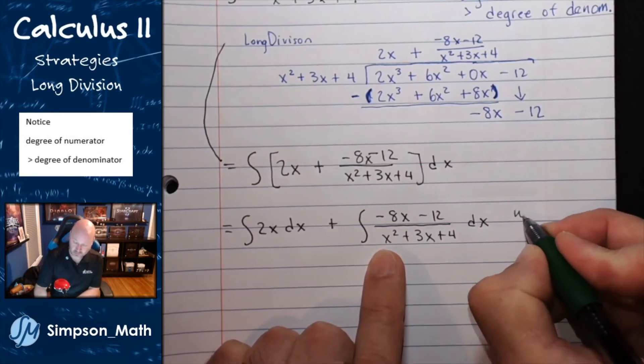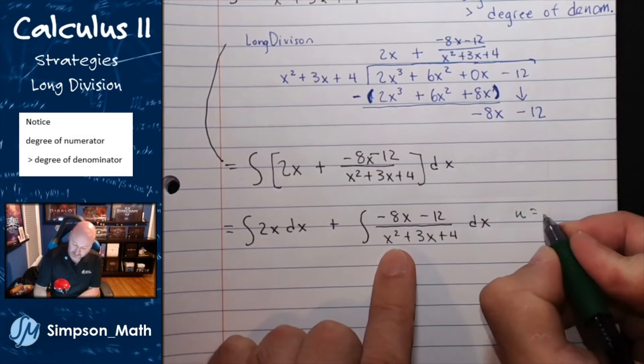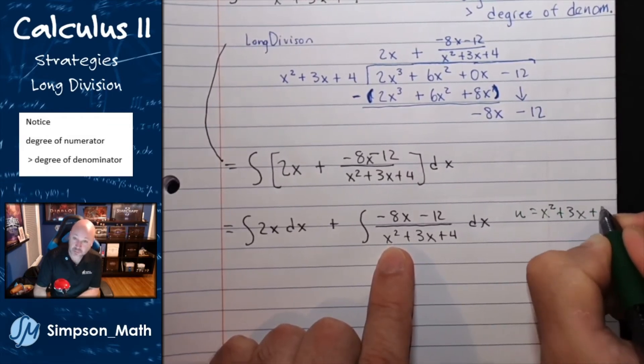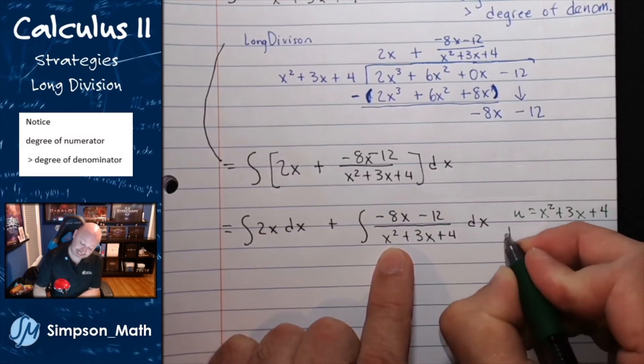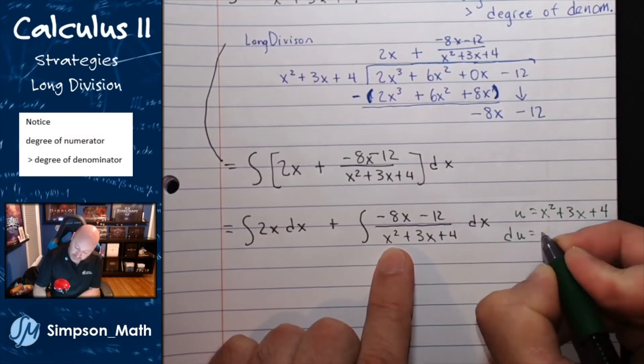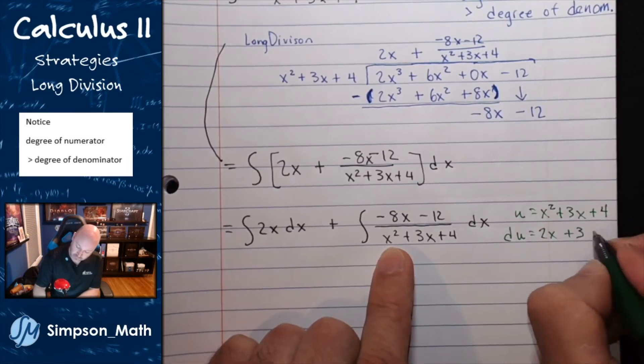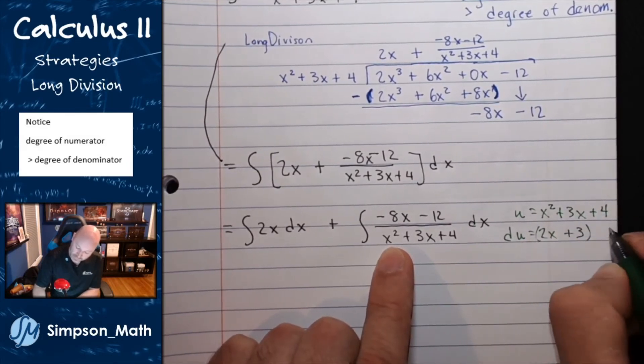If I let u be the entire denominator, x squared plus 3x plus 4, then du will be 2x plus 3 dx.